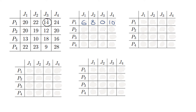Then we go to the next row. The smallest value in that row is 12, so we perform the same thing on the second row. 20 minus 12 gives us 8, 19 minus 12 gives us 7, 12 minus 12 gives us 0, and then 20 minus 12 gives us 8.